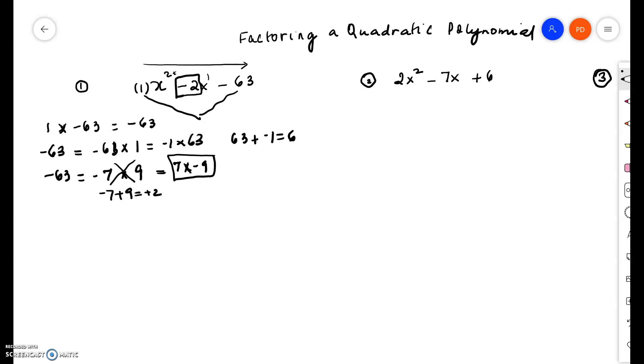So let us look at this. 7 times negative 9 is negative 63. And when I add the two, 7 and negative 9, I get a negative 2. So this is exactly what is going to work for us.